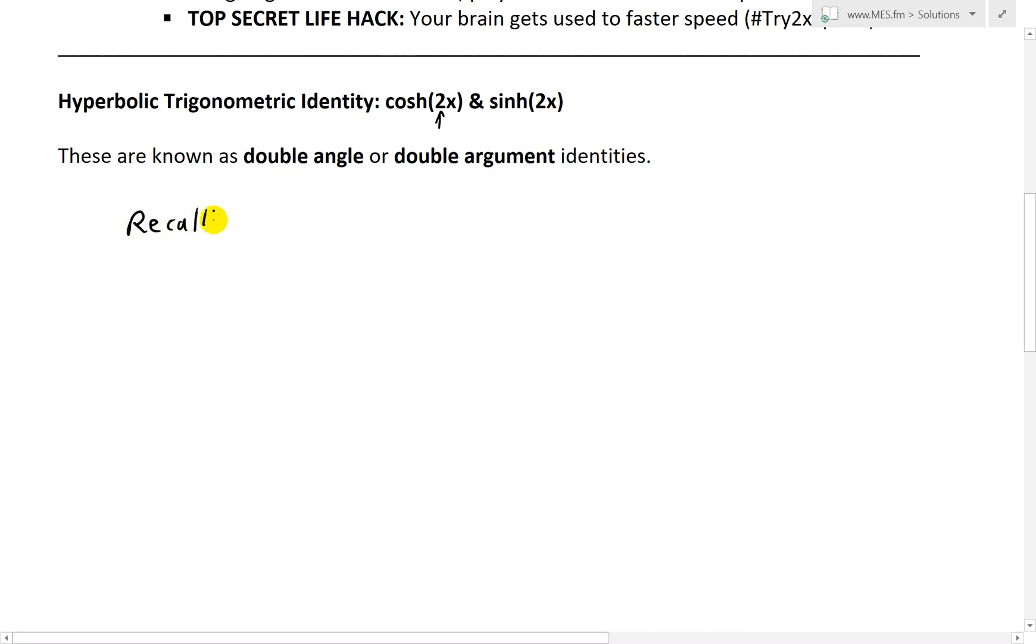And what I'll do is recall my earlier videos where I went over the proof for the identities cosh x plus y. This equals to cosh x cosh y. And you can see the proof for these in the link in the description below. And then we have sinh x sinh y, like that.